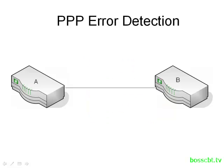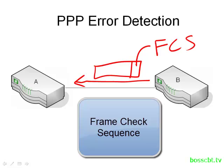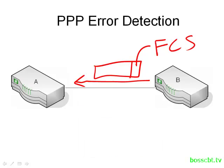PPP's ability to detect errors is pretty straightforward. If router B transmits a frame to router A, at the end of the frame is the frame check sequence, which contains a value. Router A receives the frame and runs a calculation on the entire frame, then compares the result to what's stored in the frame check sequence created by router B. If they don't match, it knows errors were introduced when that frame was transmitted across the circuit, and router A will discard that frame.